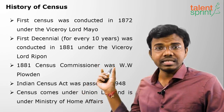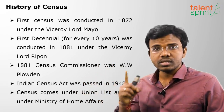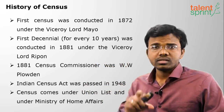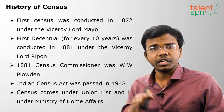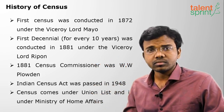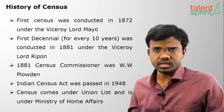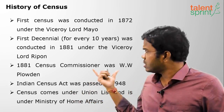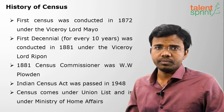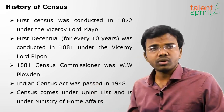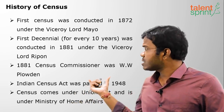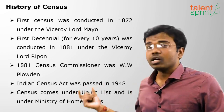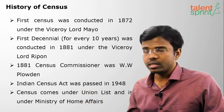From 1881 onwards till 2011, every 10 years census is conducted: 1881, 1891, and so on. The 2011 census was the 15th census in India. The first census commissioner during the first decennial census was W.W. Plowden. The Indian Census Act was passed in 1948, and census comes under the concurrent list under the Ministry of Home Affairs.